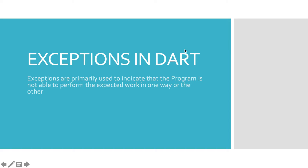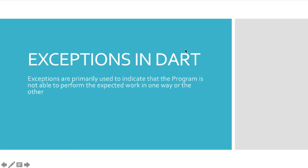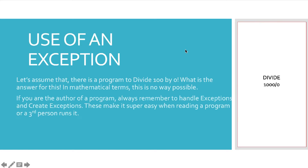Exceptions are primarily used to indicate that the program is not able to perform the desired actions requested. In a normal happy flow of a program, it should be able to divide any number by any number, but as I mentioned, 1000 divided by zero is not possible. In that scenario, you throw an exception saying this is not possible, and we terminate there.